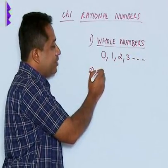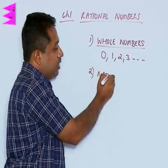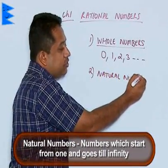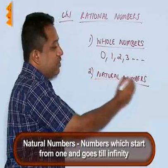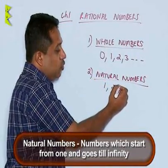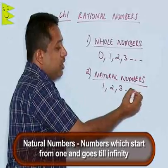Then we have natural numbers. Natural numbers are numbers which start from 1 and goes up to infinity. So natural numbers are numbers which starts from 1. We have 1, 2, 3 and it goes on up to infinity.